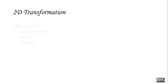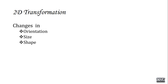What is meant by a transformation? If you are having any object, changing the object's orientation, size, or shape is defined as a 2D transformation. You can change the position of an object, the size of an object, or the shape of the object.